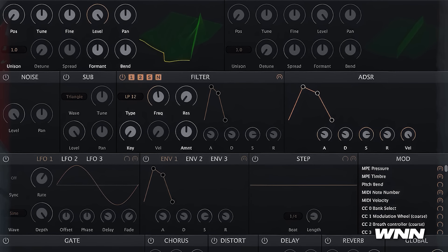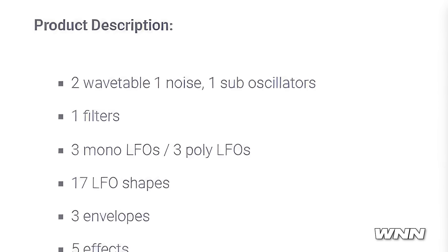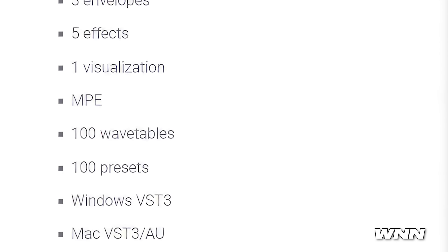In our next story, we're going to talk about a free open-source synth named Wavetable — wait, it's actually named Wavetable? There's no way anyone's going to be able to find this on Google. Anyway, it supports MPE, has a nice-looking UI, two wavetable oscillators as well as a noise and sub oscillator, filters, LFOs, envelopes, effects — the works. It features 100 wavetables and 100 presets. Definitely pretty good for a free synth; I don't know if it'll challenge Vital but it might be worth checking out.